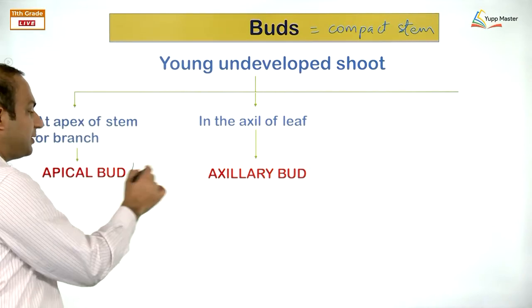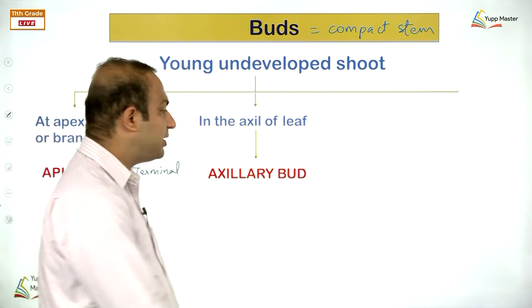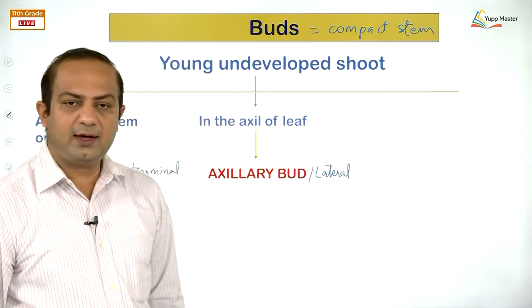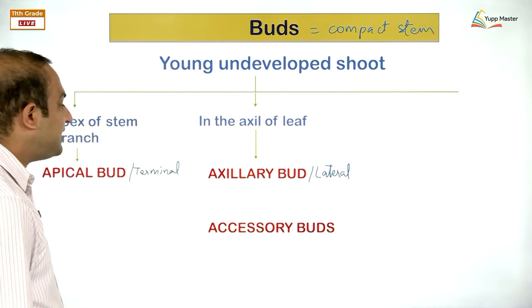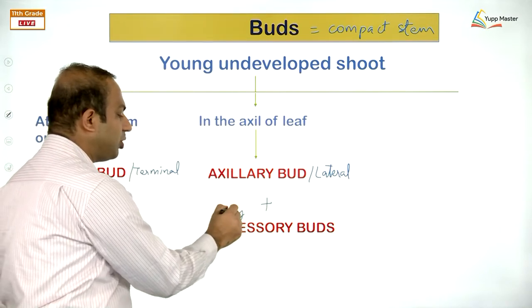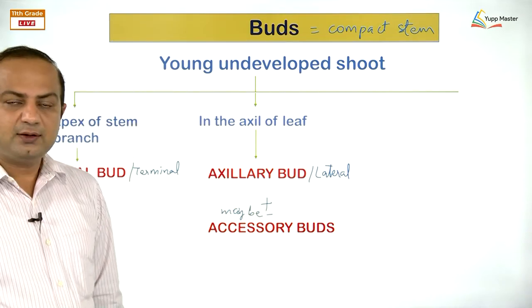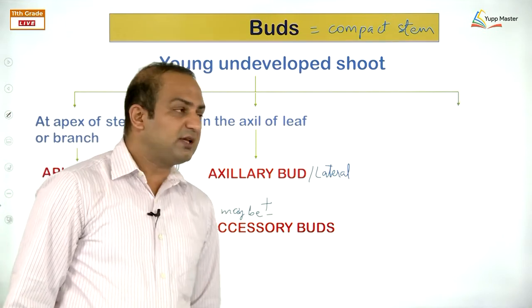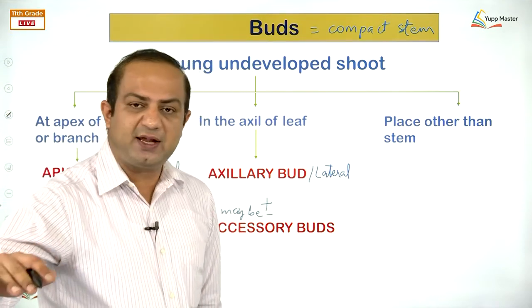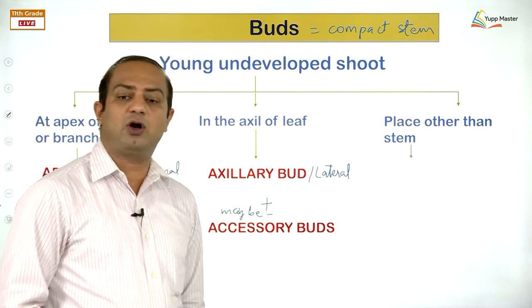The second type of adventitious bud is the foliar bud — buds present on leaves, seen in Bryophyllum. Because of buds, structures like sweet potato and Dahlia can propagate vegetatively, as a bud is a miniature structure that can give rise to a whole plant. In certain cases, buds may get modified — instead of bearing a leaf or flower structure, they may perform other functions.